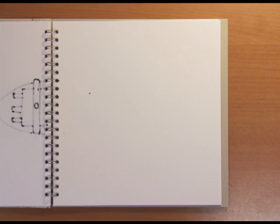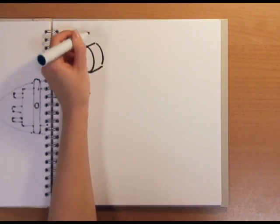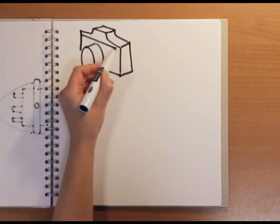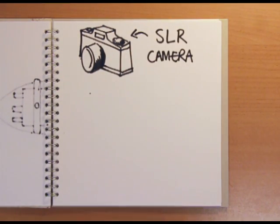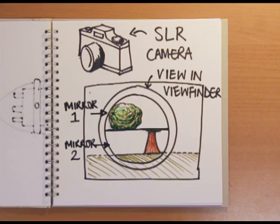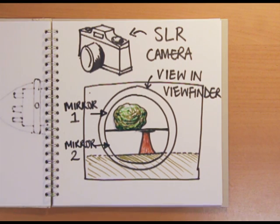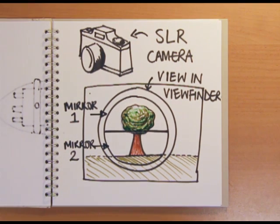So how does this work in a camera? Well, in a manual SLR camera, which are those cameras with a big removable lens on the front, you have pretty much the same setup. Inside the camera, there are two mirrors that you can change the orientation of using the focus ring. A display inside the viewfinder allows you to see when the images from the two mirrors line up.